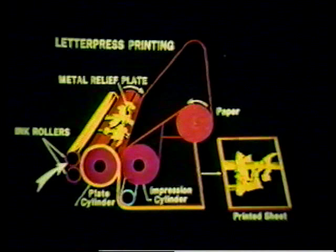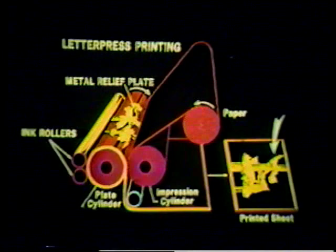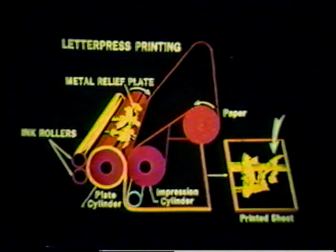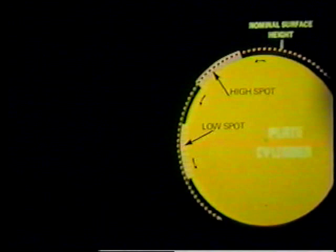Inking rollers apply viscous inks to the raised surfaces of the image carrier, which then comes into contact with the substrate, transferring a legible image from the printing image. The printing substrate can be any of a variety of materials. An impression cylinder supports the sheet against pressure from the image. The face of a letterpress plate usually has slight irregularities in height, which press too hard against the substrate in some areas and not hard enough in others.